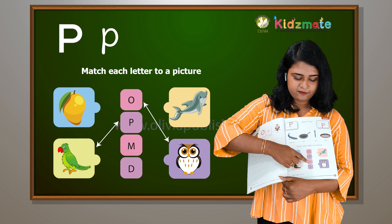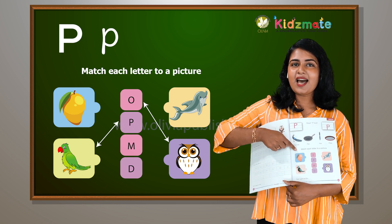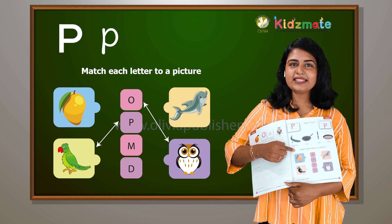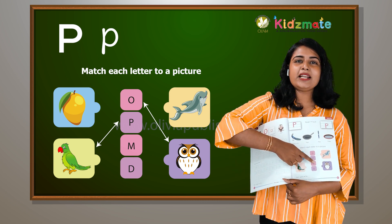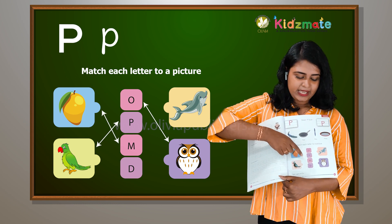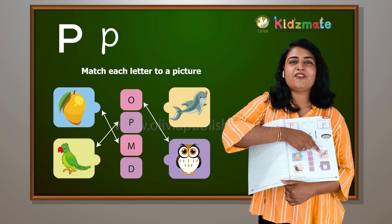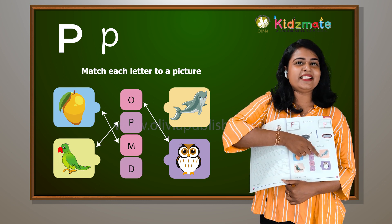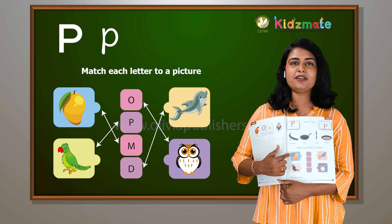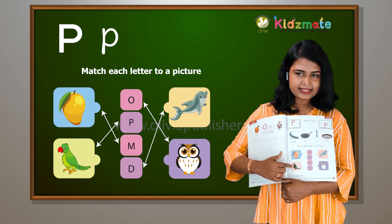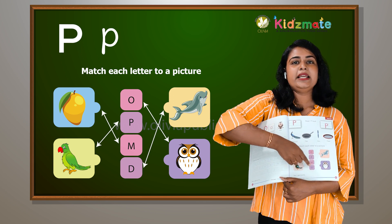Then M for — what do you have here? This fruit — what fruit is this? This is a mango. M for mango. And D for — what is this here? D for dolphin. So this is mango, this is a parrot, this is a dolphin, and this is an owl.